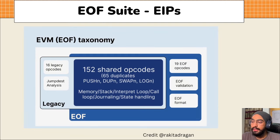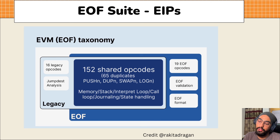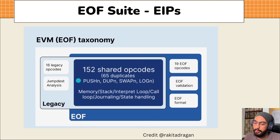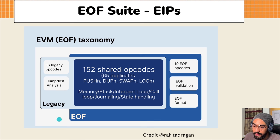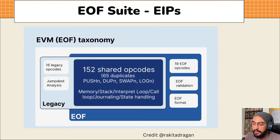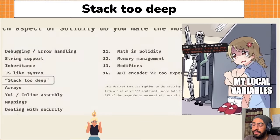Let's also look into the EOF taxonomy, which visually represents the EOF changes. EOF separates EVM bytecode from data, making it easier for static analysis tools, formal verification, and L2s to process the executable code. As you can see in this diagram, there are 16 legacy opcodes for the current EVM, and 19 new EOF opcodes for validation and format in the new EOF EVM. This is just a basic overview of the opcodes.